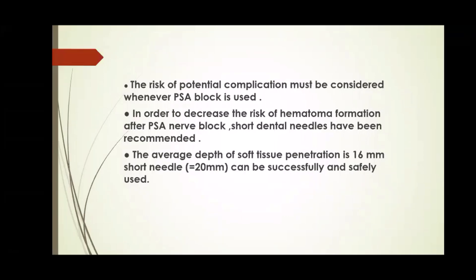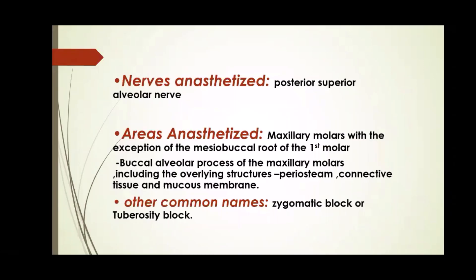The risk of potential complications must be considered whenever PSA block is used. In order to decrease the risk of hematoma formation after PSA nerve block, short dental needles have been recommended. The average depth of soft tissue penetration is 16 mm; a short needle of 20 mm can be successfully and safely used. The nerve anesthetized is the posterior superior alveolar nerve. Areas anesthetized are the maxillary molars with the exception of the mesiobuccal root of the first molar, as well as the buccal alveolar process of the maxillary molars including overlying structures — periosteum, connective tissue, and mucous membrane. Other common names are the zygomatic block or tuberosity block.